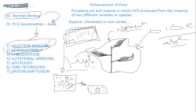Polyploidy means increasing the ploidy level inside the plant. This ploidy can be increased using a polyploid agent. The chemical Colchicine, called Spindle Poison, is used to induce polyploidy.